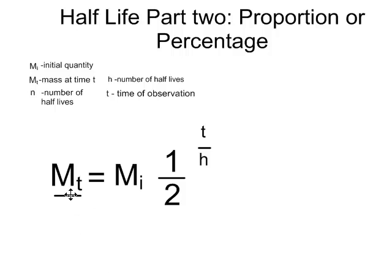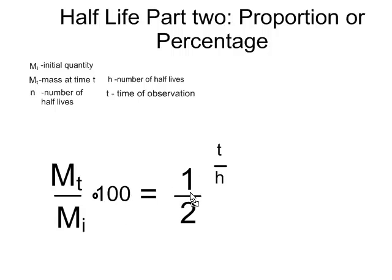So we just have to tweak our equation a little bit, divide both sides by the initial mass, and multiply both sides by 100 because in this case we're dealing with a percentage.